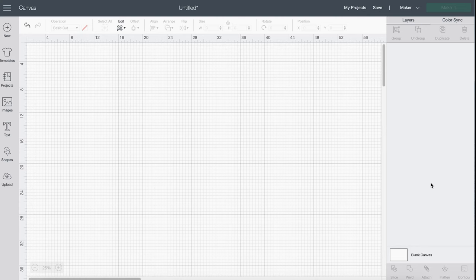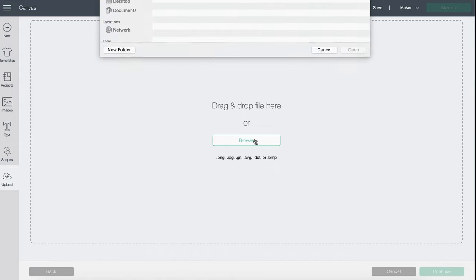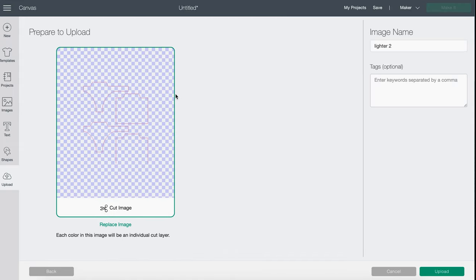First step is to open Cricut Design Space. Then you go to Upload, Upload Image and Browse, and then you select the SVG file that you got from my Etsy shop. Then click Upload.